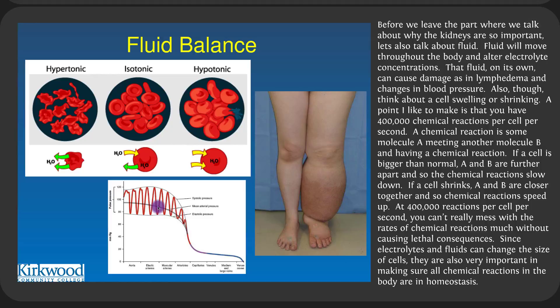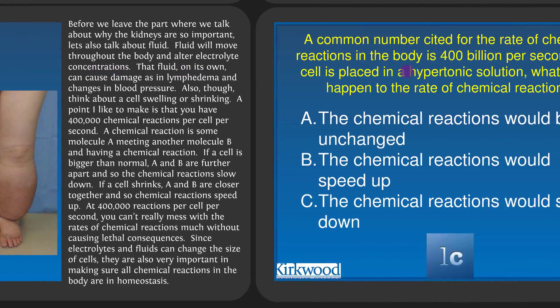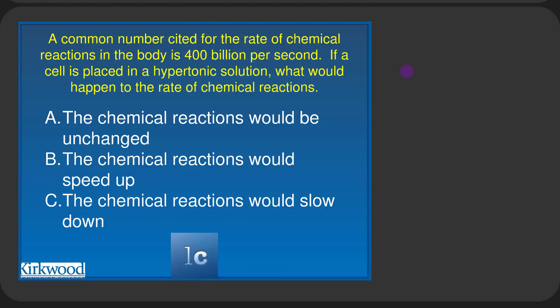Fluid moving throughout the body can alter electrolyte concentrations and cause damage — as in lymphedema and changes in blood pressure. If a cell has 400,000 chemical reactions per cell per second, swelling or shrinking will affect those reactions. If a cell is bigger than normal, molecules A and B are further apart, so chemical reactions slow down; if the cell shrinks, A and B are closer together and chemical reactions speed up. At 400,000 reactions per cell per second, you can't mess with those rates without lethal consequences. In a hypertonic solution, water leaves the cell, the cell shrinks, and chemical reactions would speed up.